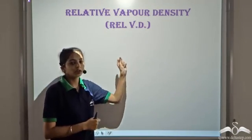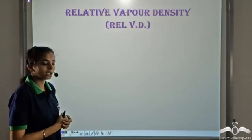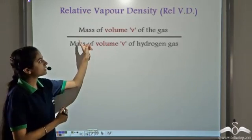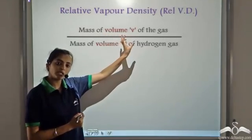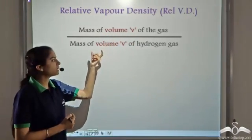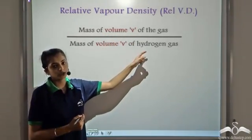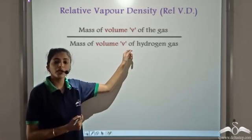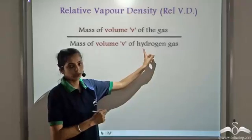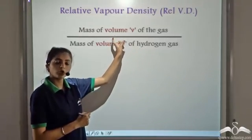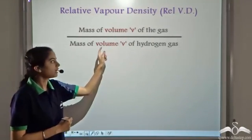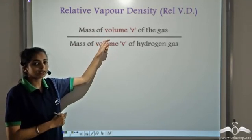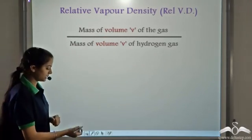Now let's see how we calculate the relative vapour density for any gas. This is done by taking the mass of volume V of a particular gas and dividing it by the mass of volume V of hydrogen gas — the lightest gas. The same volumes of the two gases are taken and compared.